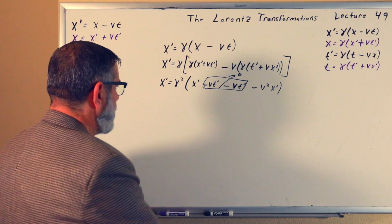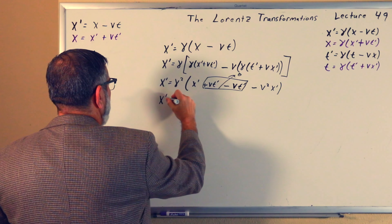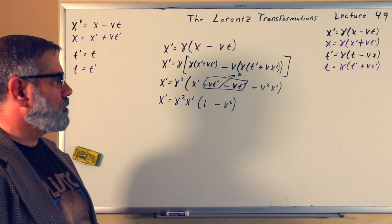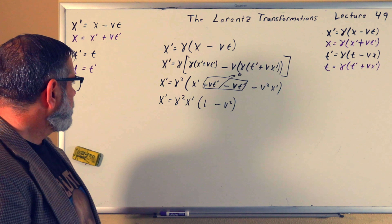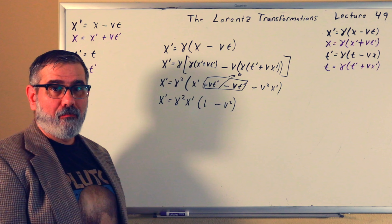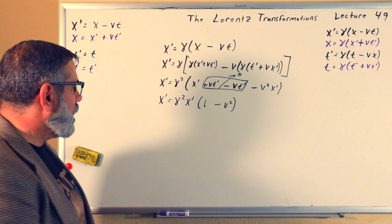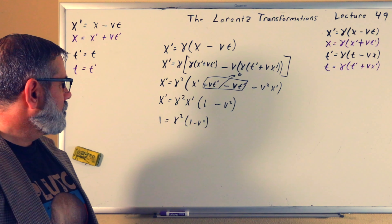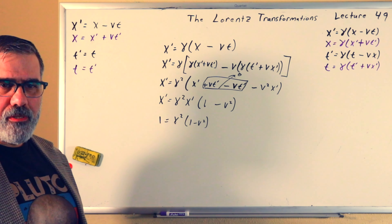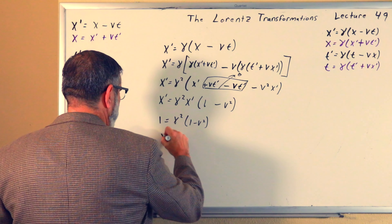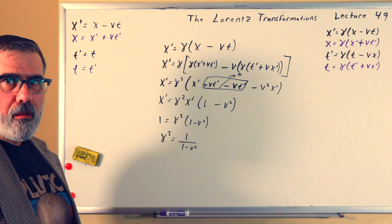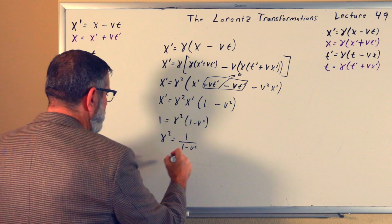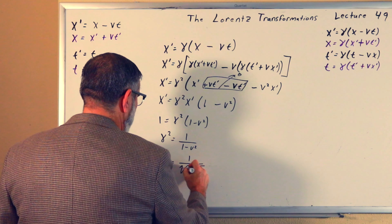All that remains is x prime minus v squared x prime. Factoring out x prime: x prime equals gamma squared times x prime times (1 minus v squared). Dividing both sides by x prime gives 1 equals gamma squared times (1 minus v squared). Dividing by (1 minus v squared) and flipping: gamma squared equals 1 over (1 minus v squared). Taking the square root: gamma equals 1 over the square root of (1 minus v squared).